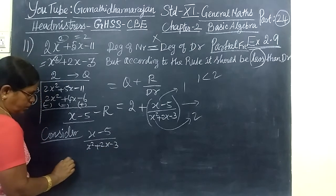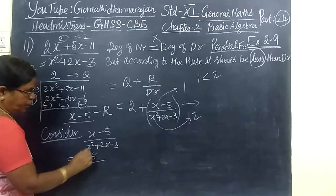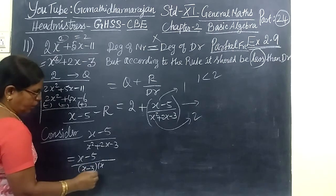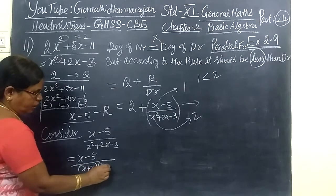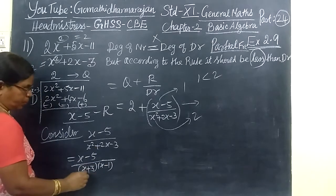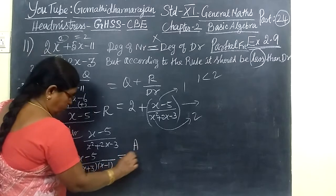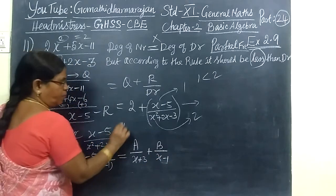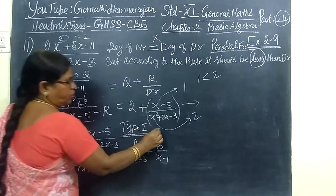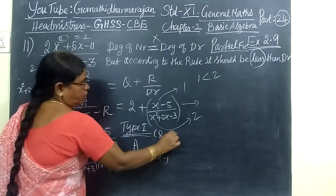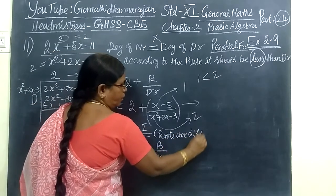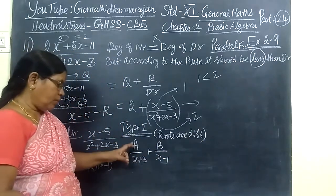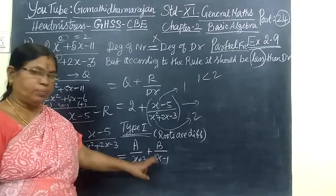X minus 5 by X² plus 2X minus 3. You split into factors. So this is equal to X minus 5 by, you just split, multiplying minus 3X and plus X. So here you can write X plus 3 times X minus 1. This will become one constant by X plus 3 plus another constant by X minus 1. This is of type 1. How do you know it is type 1? Here the roots are distinct. The zeros are distinct, different. It is type 1.